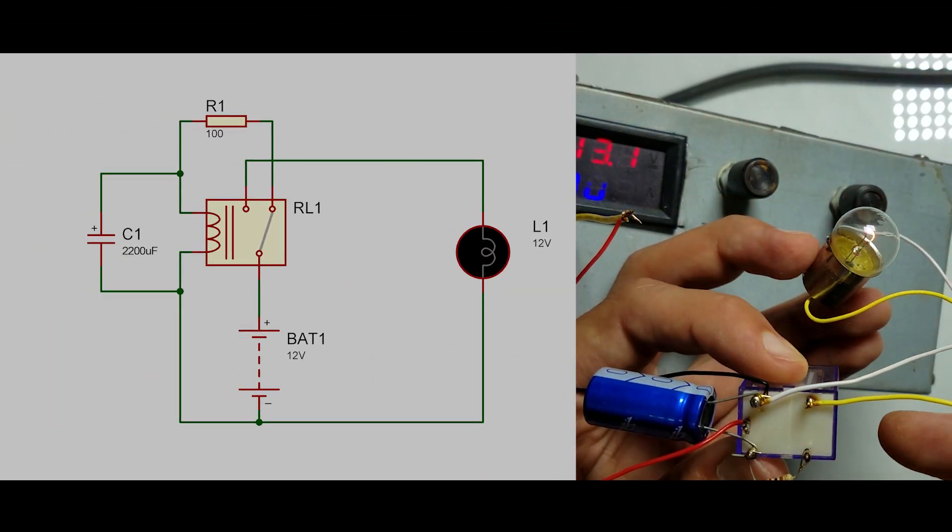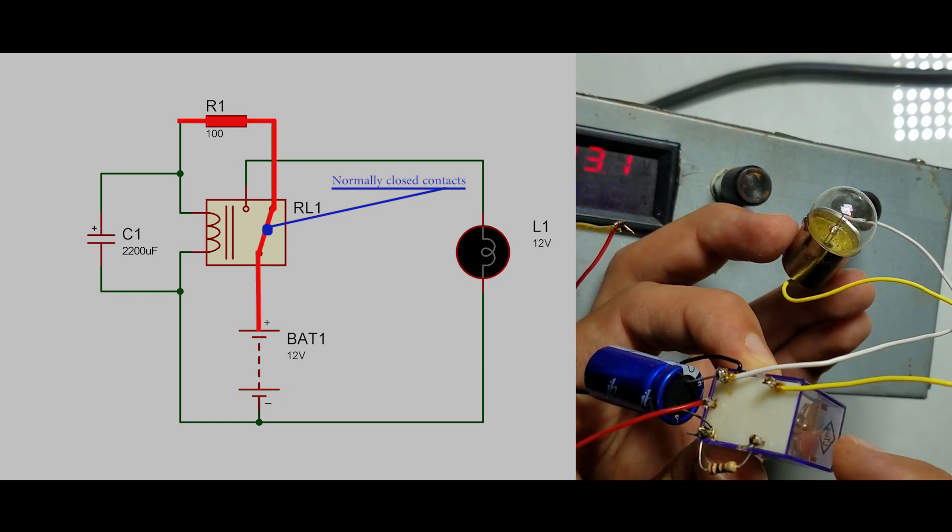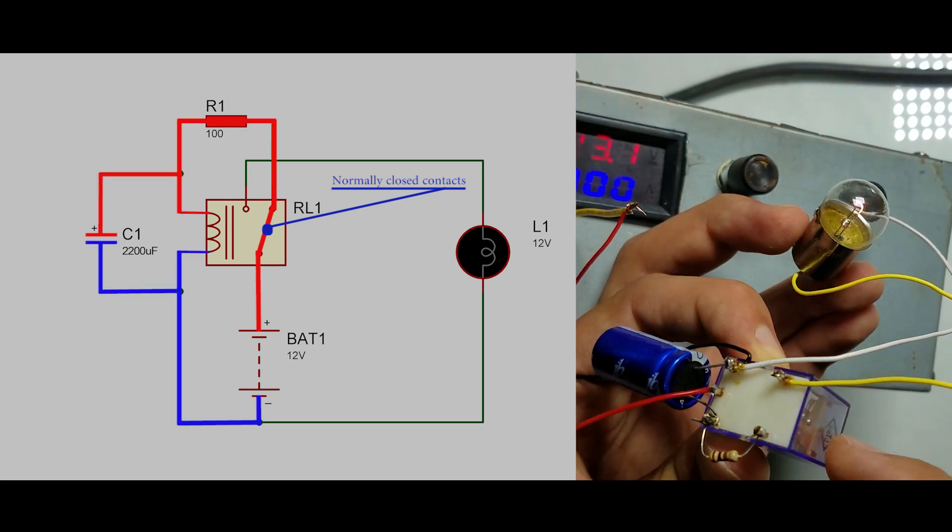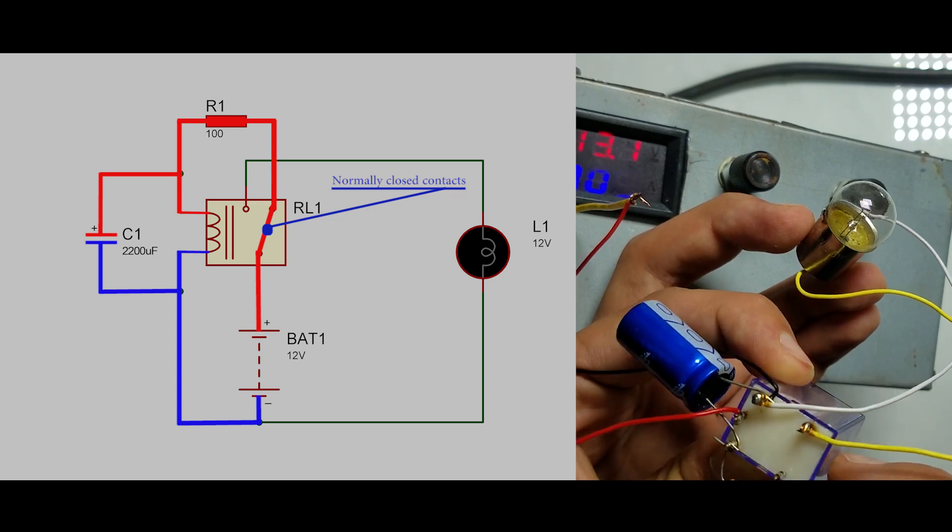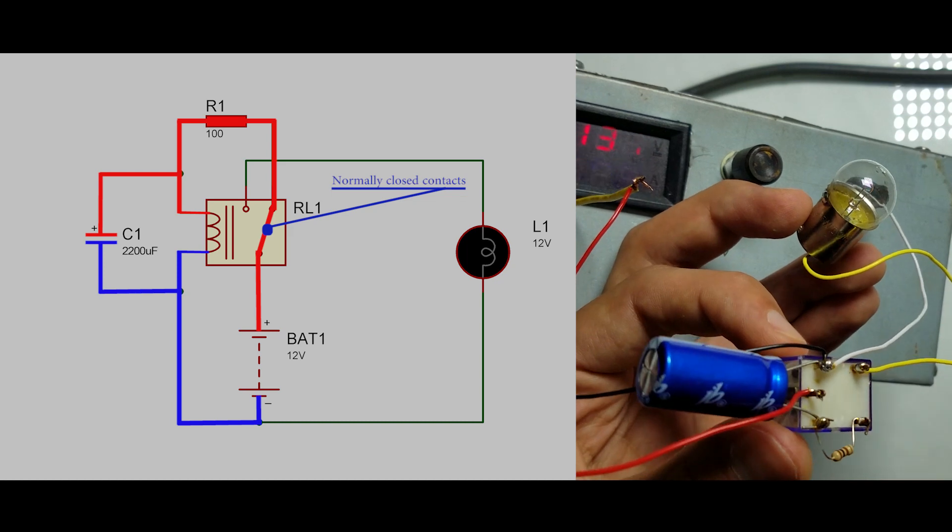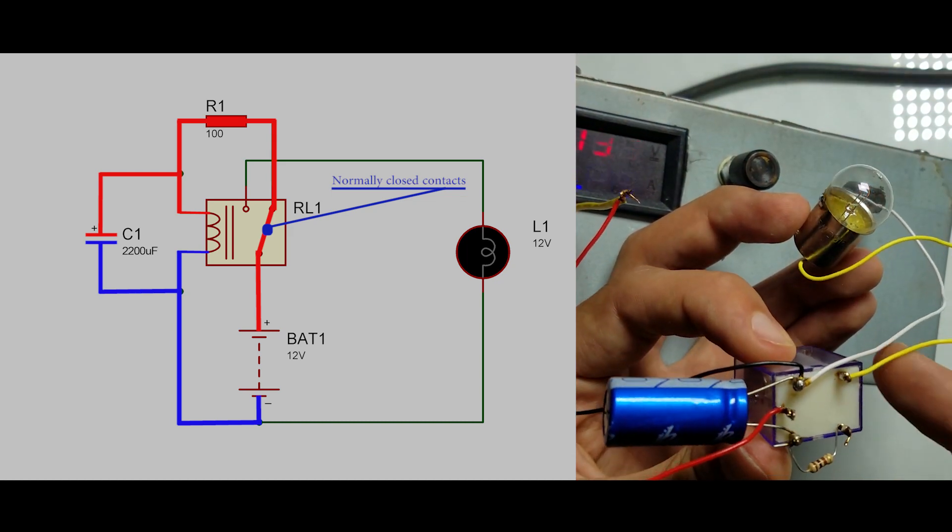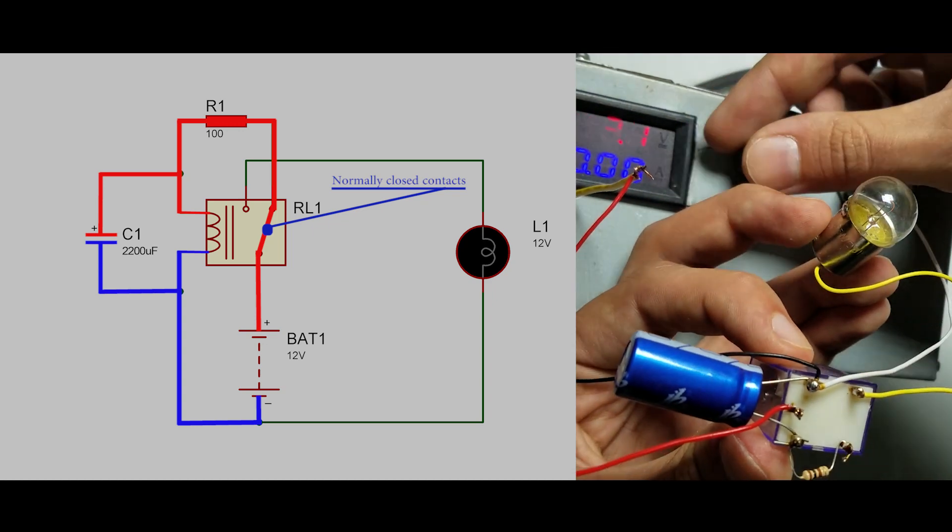Well, let me explain. As you can see, the electric current flows through the normally closed contacts, then through the resistor and charges the capacitor C1. When the capacitor charges, the voltage on the coil becomes higher and higher. So we expect that at some point when the voltage will be high enough, the relay will switch and disconnect the power to the coil.